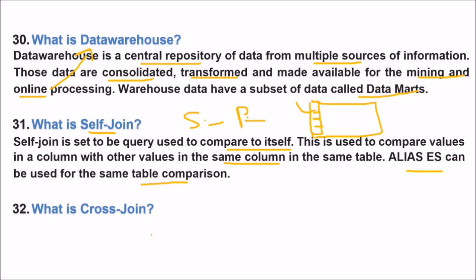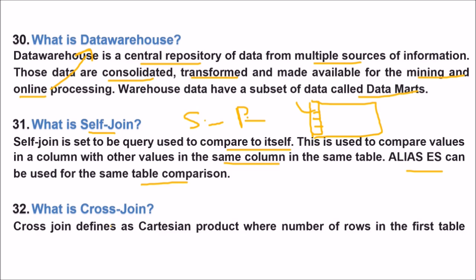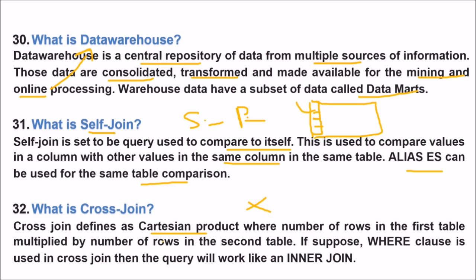What is a cross-join? Cross-join defines a Cartesian product where number of rows in the first table multiplied by the number of rows in the second table, this is cross-join. So if just for instance where clause is used in this cross-join, then the query will work like an inner-join, the outer-join, etc.